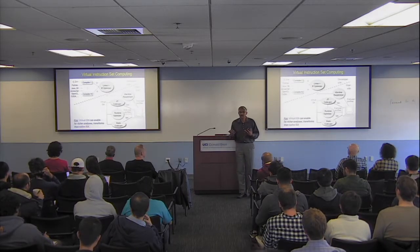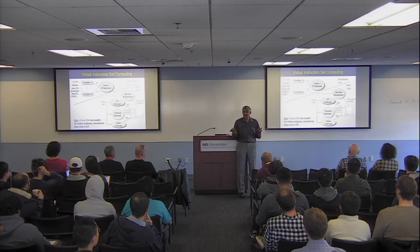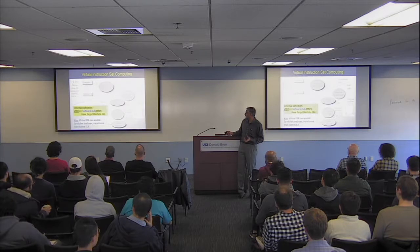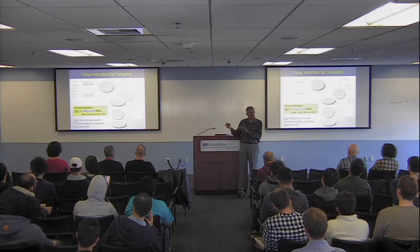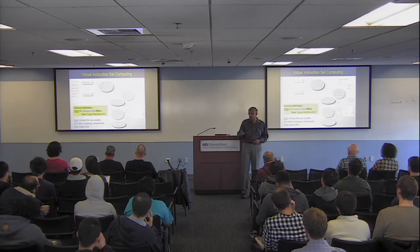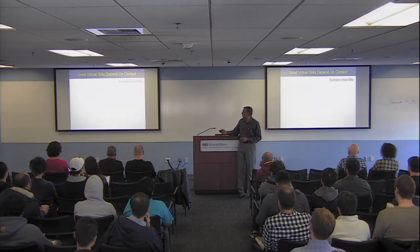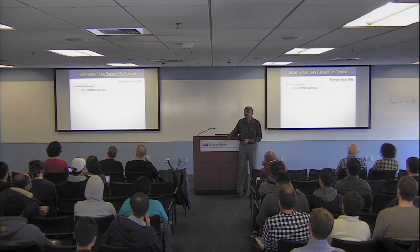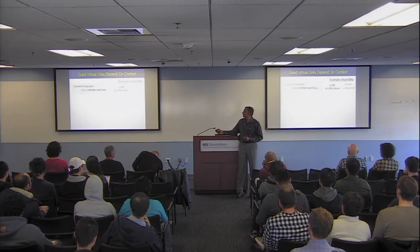We generally call this virtual instruction set computing — in contrast to reduced or complex instruction sets. Informally, virtual instruction set computing is any model where a software ISA used to ship software differs from the actual instruction set used to execute code on the machine. What virtual ISA you should use depends on the context. For low-level static languages like C, C++, Fortran, Swift, and Rust, LLVM is a virtual instruction set that we've developed in my group, which I'll say a bit more about. It's a pretty mature project at this point.